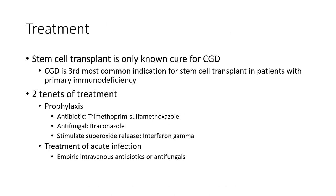Treatment: stem cell transplant is the only known cure for chronic granulomatous disease, and is the most common indication for stem cell transplant in patients with primary immunodeficiency. Prophylaxis includes antibiotics such as trimethoprim-sulfamethoxazole and antifungals such as itraconazole. Interferon-gamma stimulates superoxide release. Treatment of acute infections involves intravenous antibiotics or antifungals.